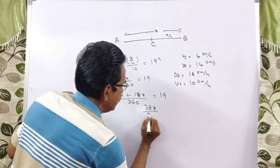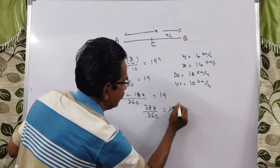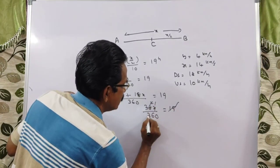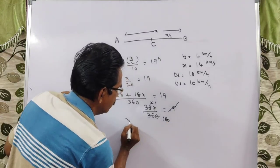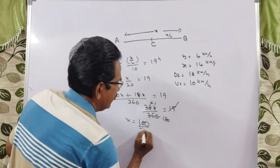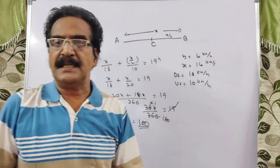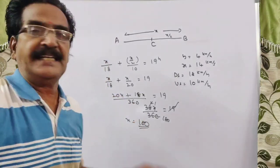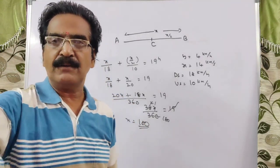19 ones, 19 twos, 2 ones, 2 180s, x is equal to 180 km. So the distance between A and B is 180 km. Okay friends, thank you, have a nice day.